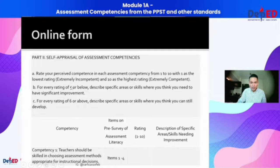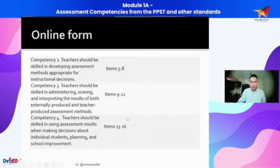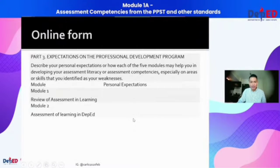The lowest rating is 1, meaning extremely incompetent if you feel that you're extremely incompetent, and 10 if you are extremely competent. Then describe what corresponds to your rating — put a description of the specific skill that you need improvement on. The same instruction applies for the rest of the assessment competencies.